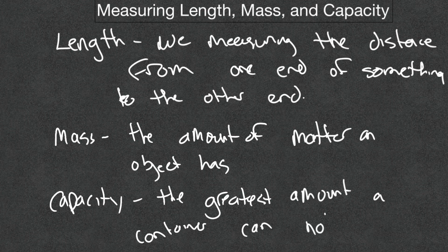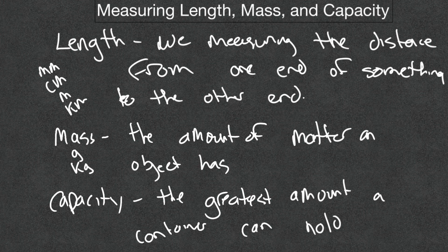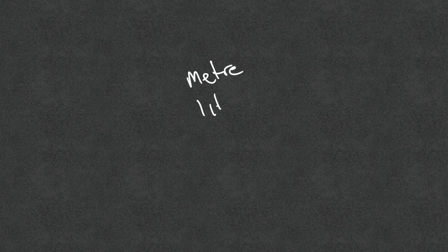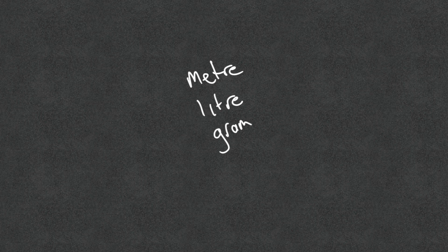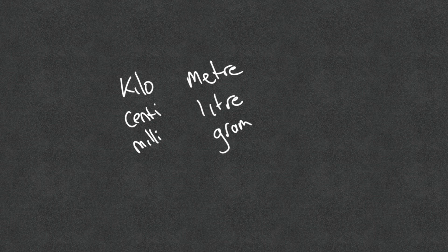If we're looking at length, we can use different units such as millimeter, centimeter, meter, and kilometer. For mass we can have grams and kilograms. For capacity we're going to look at units such as milliliters and liters. We use the metric system, so we're dealing with meters, liters, and grams as our base units, and we add prefixes onto those base units to change the meaning. A prefix could be kilo, centi, or milli.